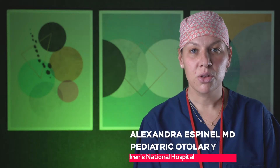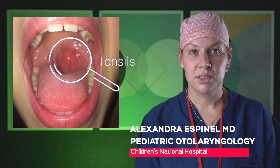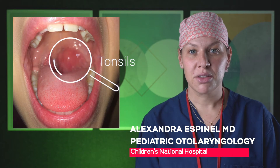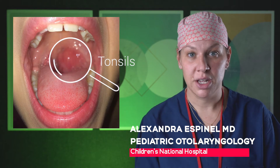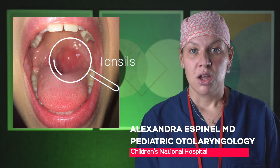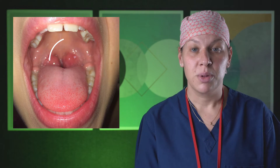Tonsils are located all the way in the back of your throat. If you were to open your mouth, you can see the tonsils on either side of your throat, just beyond your teeth. Small tonsils are tonsils you can barely see. Large tonsils are ones that are coming together and almost touching in the midline.